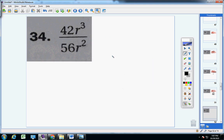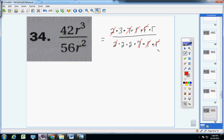Number 34. Prime factors of 42, R cubed would be this: two, three, seven, and then three R's, R, R, R. Prime factors of 56 would be two, two, two, seven, and then two R's, R, R. Two's cancel out. Seven's cancel out. R's cancel out, R's cancel out. Nothing else cancels out. So you're left with three R, and down here you're left with four, two times two.